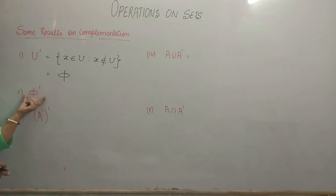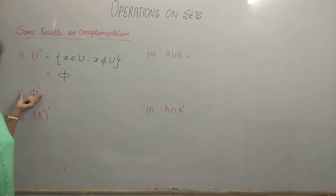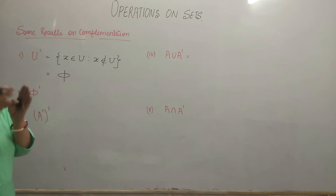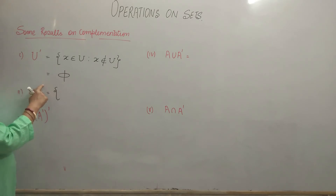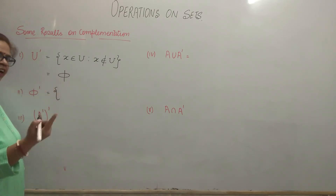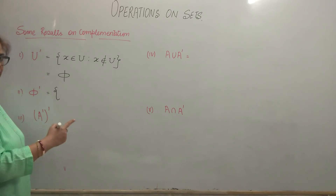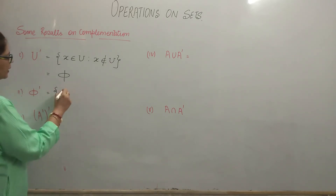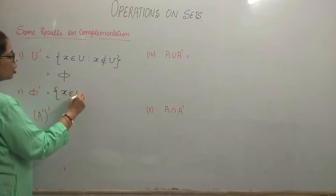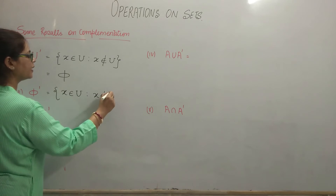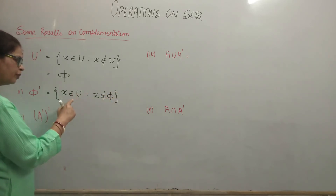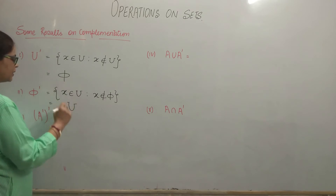Let's look at the complement of the null set. Null set has no element. So the complement of the null set is the collection of all elements of the universal set which do not belong to the null set. Since no element belongs to the null set, the whole universal set remains — so the complement of the null set is the universal set.